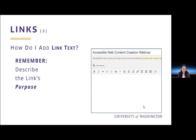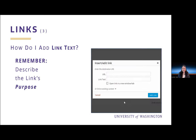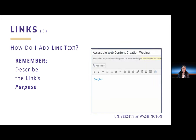So how do I create accessible links? Remember, describe the link's purpose. Using WordPress, I click the link icon to open the insert/edit dialog box. I insert the URL into the URL text box, then enter the link text into the link text box, and click add link. Note that I did not click the box to open link in a new window — I'm leaving that unchecked. When I click add link, my link is created.